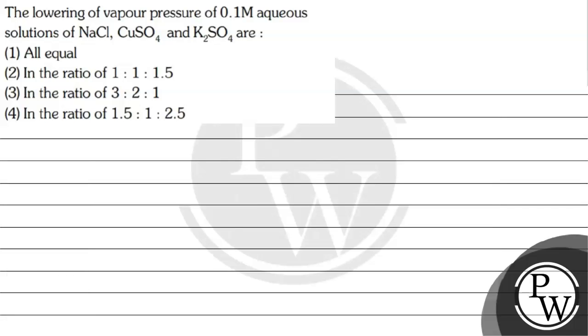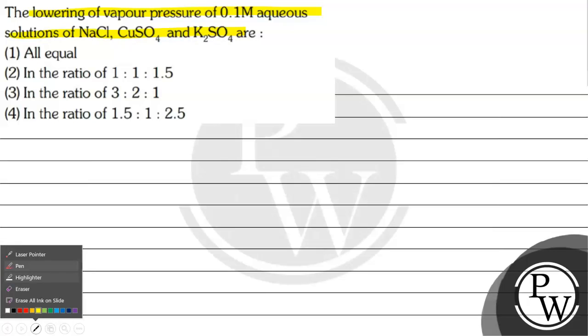Hello, let's read this question. The question says: lowering of vapor pressure of 0.1 molar aqueous solution of NaCl, CuSO4, and K2SO4. Option 1: all equal. Option 2: in the ratio 1:1:1.5. Option 3: in the ratio 3:2:1. Option 4: in the ratio 1.5:1:2.5.